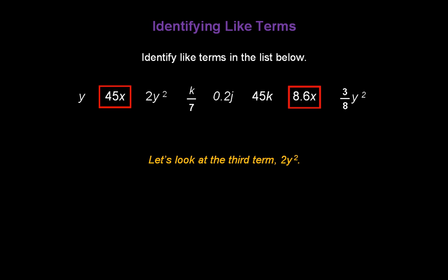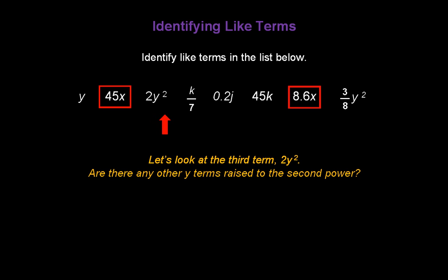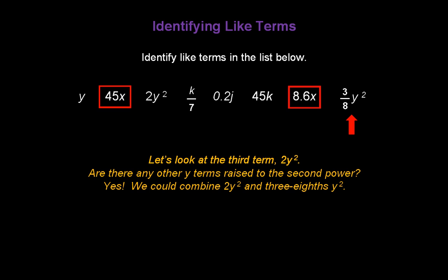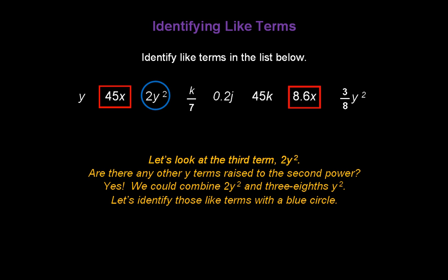Let's look at the third term, 2y to the second power. Are there any other y terms raised to the second power? There's a k term, a j, another k — and the very last term is y raised to the second power. So yes, we could combine 2y squared and 3/8 y squared. Let's identify those like terms with a blue circle.